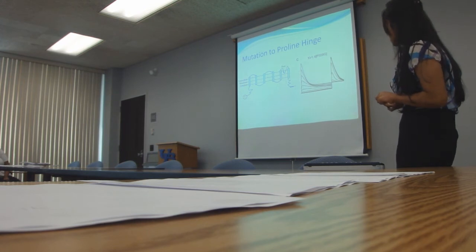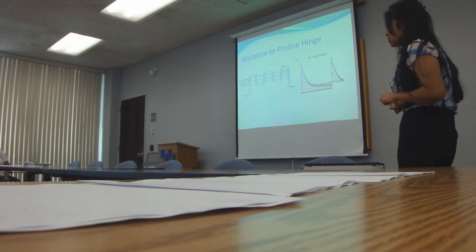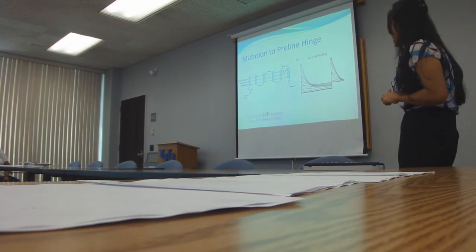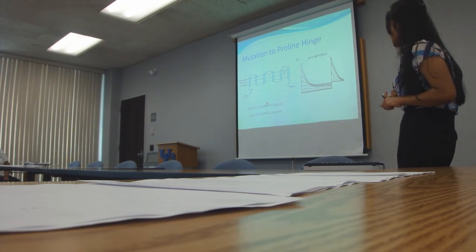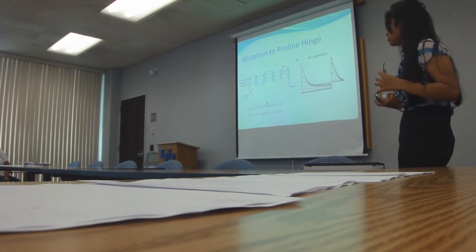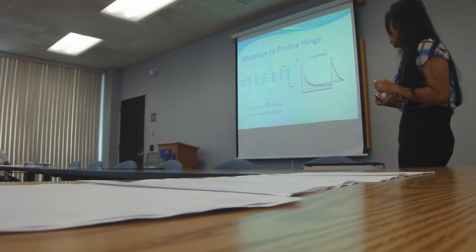This is the structure of our wild type, but this graph is different from the ones we've seen before. This is because the second proline in the hinge is mutated to a glycine. The mutation has changed the flexibility of the proline hinge, causing inactivation to slow down.